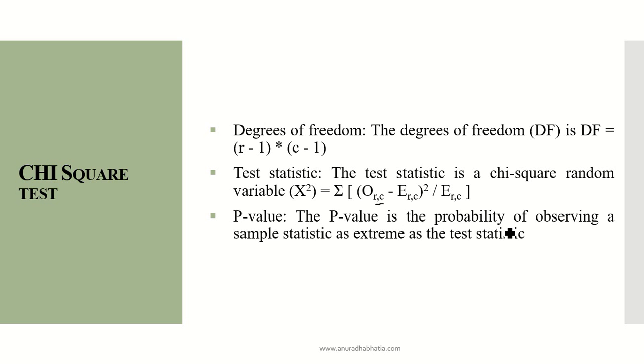The p-value is the probability of observing a sample statistic as extreme as the test statistic. This is how we compute the p-value and then find out whether it clears the chi-square test or not.